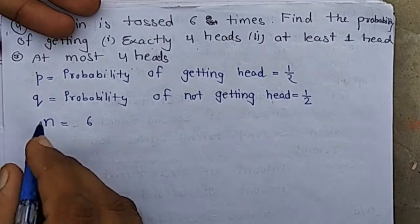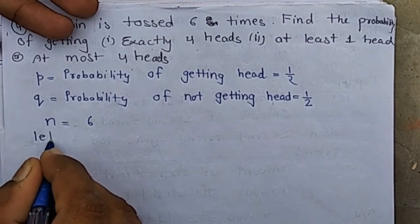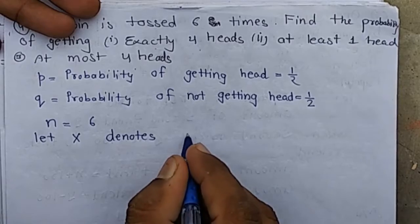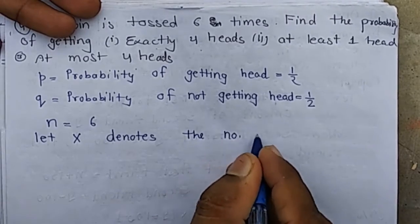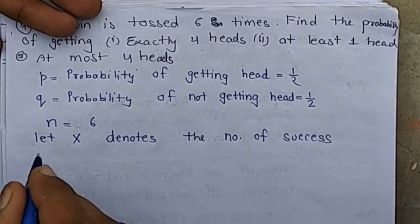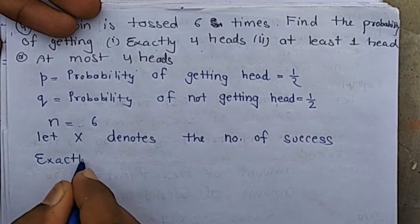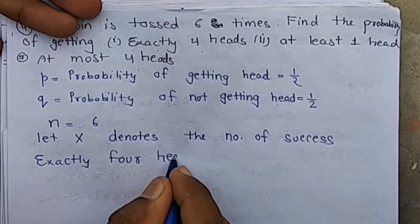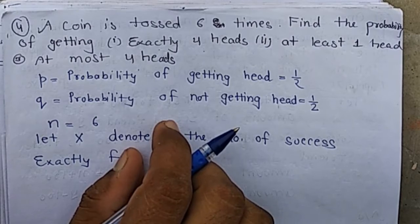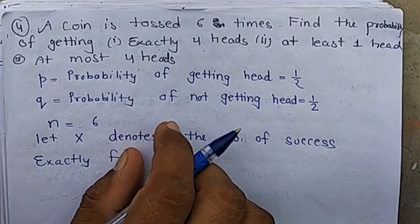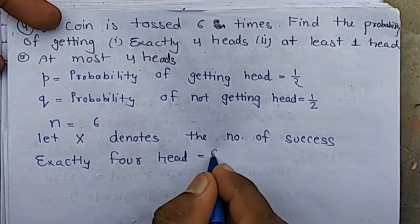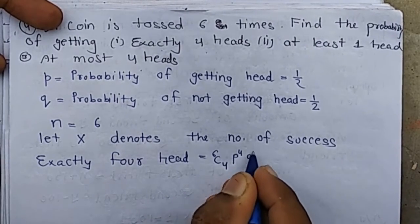Let X denote the number of successes. For exactly 4 heads, we apply the binomial formula: P(X=4) = 6C4 × P^4 × Q^2.